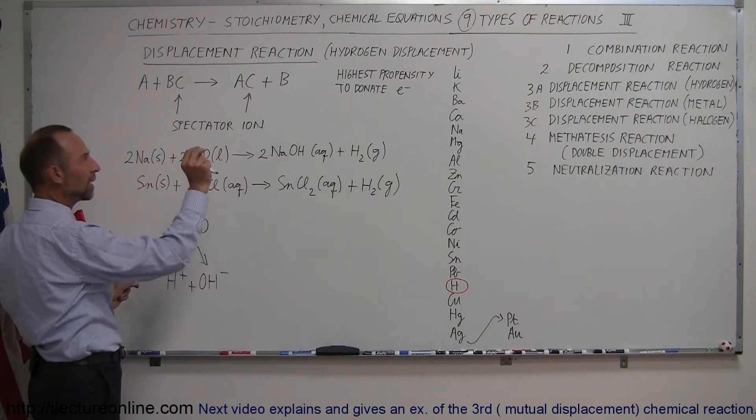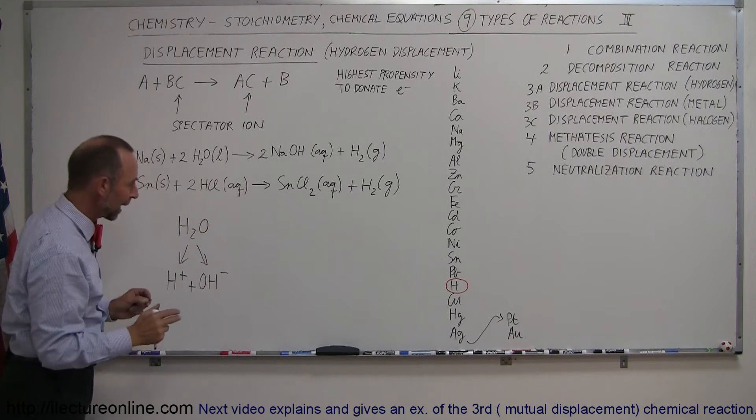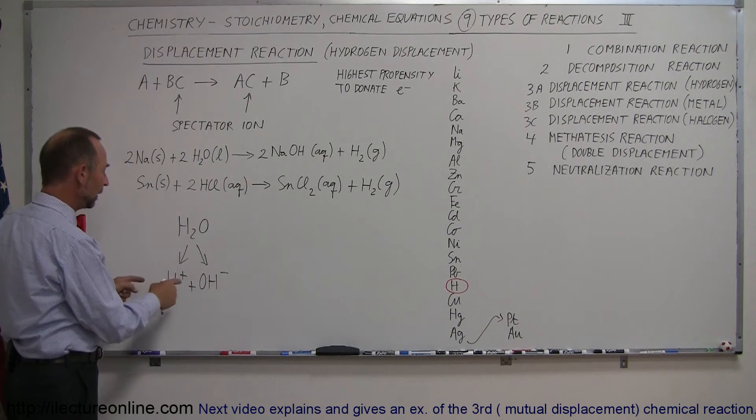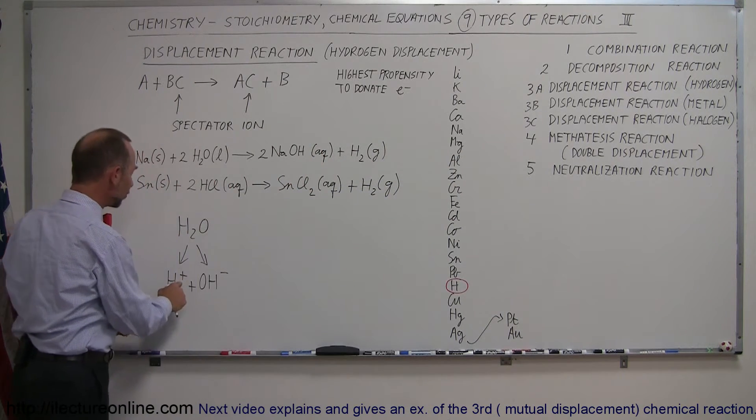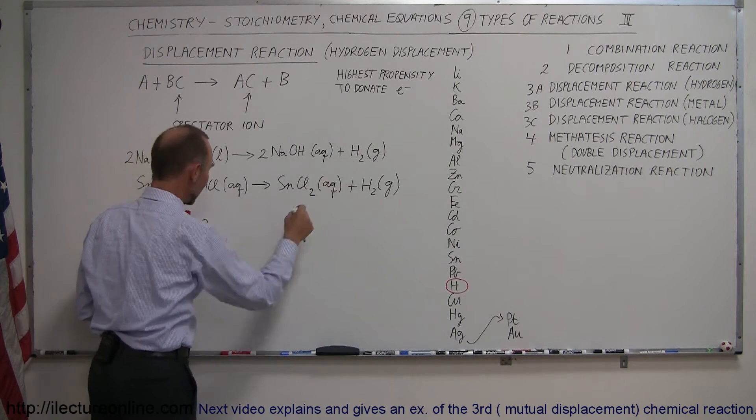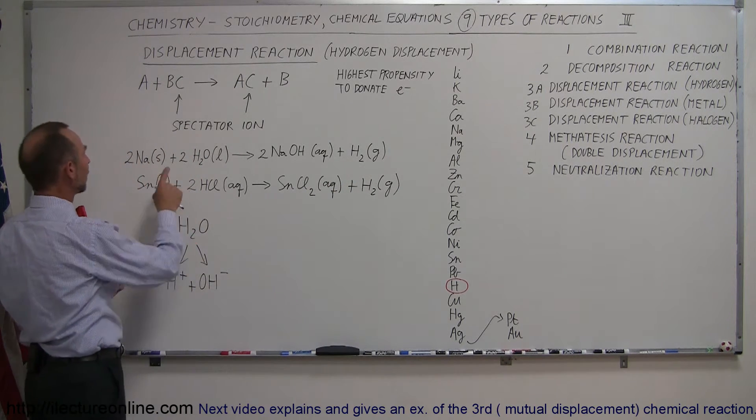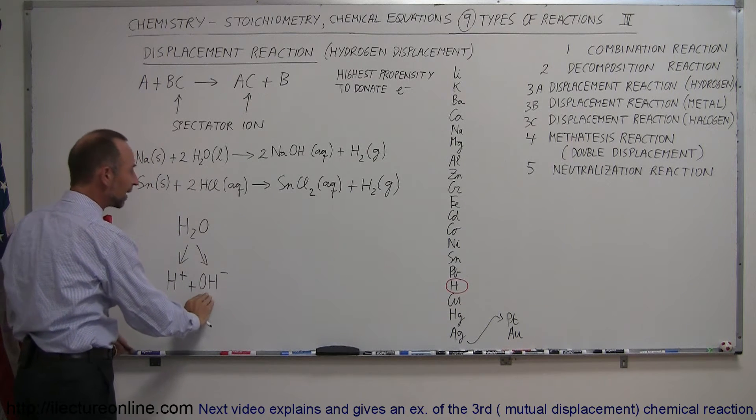And what happens then is, if you place a metal, like lithium or potassium or barium or calcium or something like that, into water, then the electron can be easily removed from one of those elements, given to hydrogen, and then hydrogen can form bonds with each other, and form hydrogen gas, in such a way then, that the remaining element that was in there will then bond with the hydroxide ion.